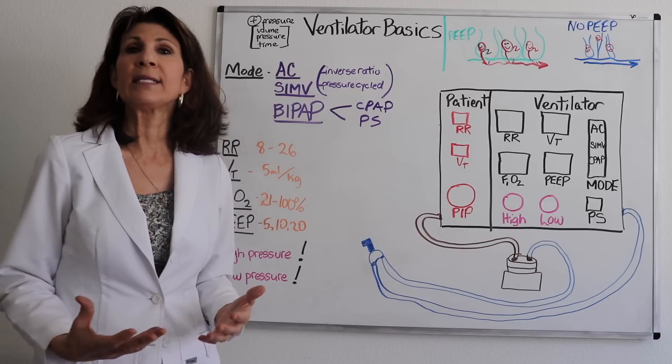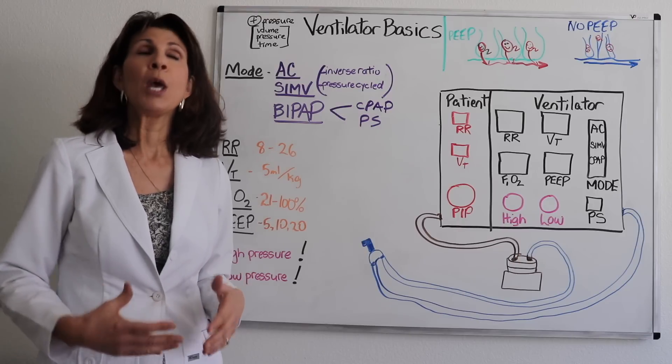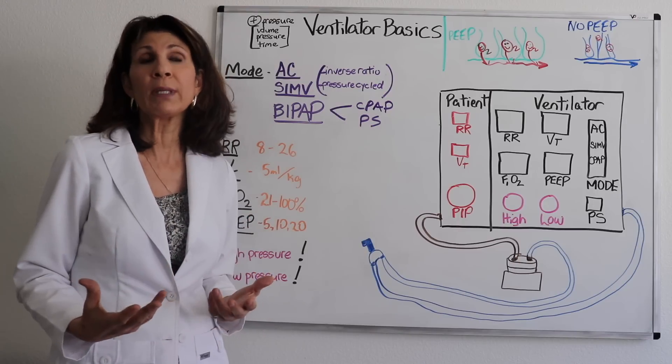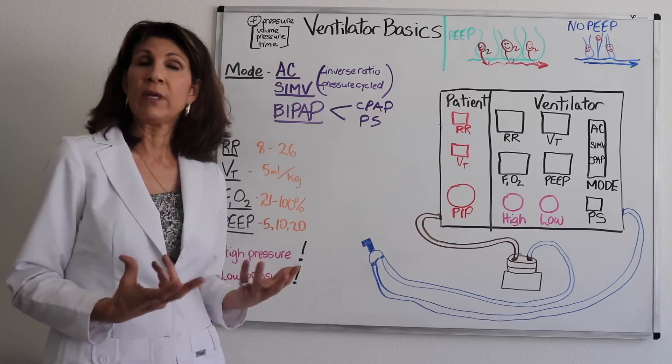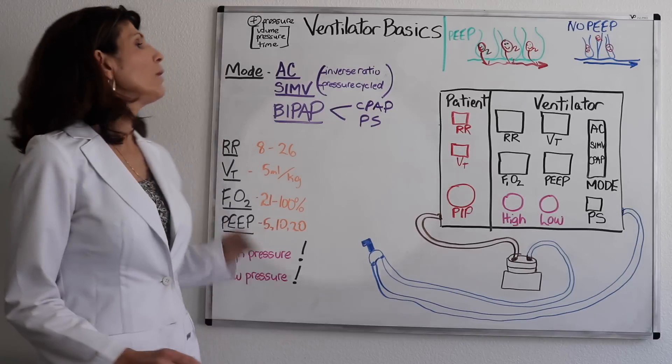Just like anything that's sedentary, when your diaphragm isn't moving and isn't exercising, it's going to atrophy and it makes it that much harder for it to get back and ventilate normally when it's time to take the endotracheal tube out or the trachea out and put the machine aside.